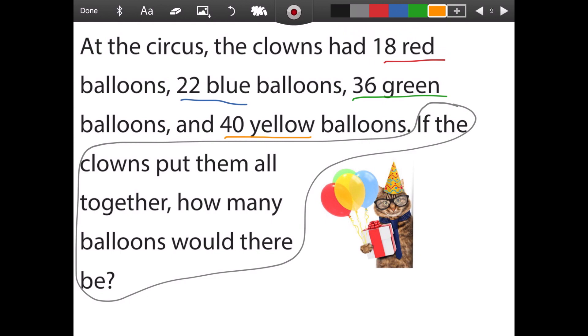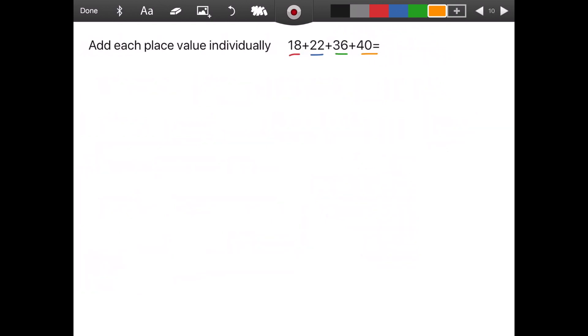I know what I can do. I can use some of the strategies that I have learned in school, which I'm going to review right now. One strategy is that I can add each place value individually. I have my four addends and I'm going to add the place value individually, meaning I'm going to add all the ones together first and then the tens together. So I'm first going to line up all of these addends vertically.